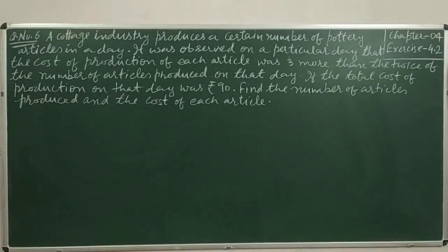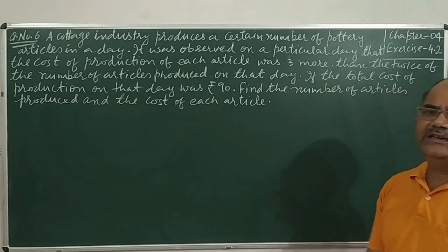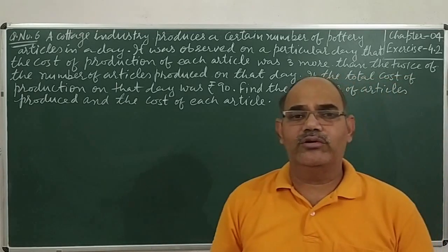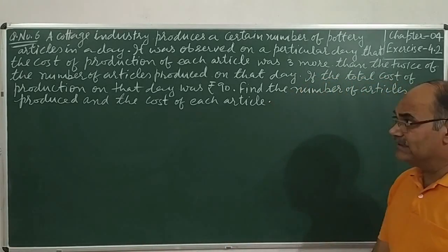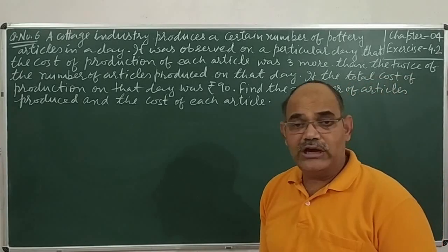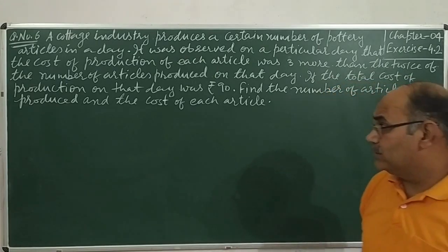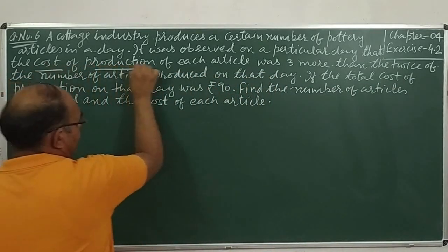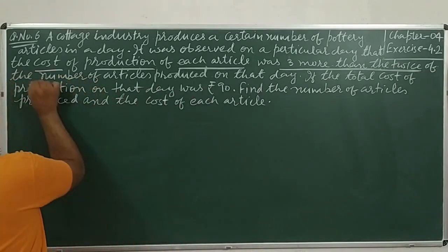Now we start question number 6, the most important question of this exercise. A cottage industry — a small-scale industry producing items like envelopes or portrait articles at home — produces a certain number of articles in a day. It was observed that the cost of production of each article was three more than twice the number of articles produced on that day.